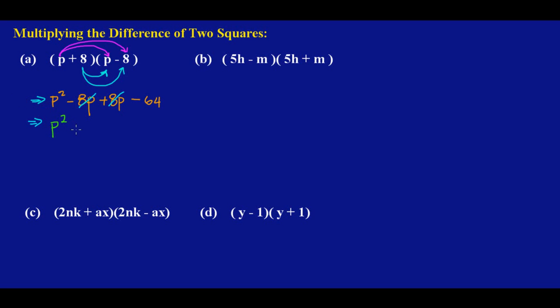And that's my answer, beautiful. So that's how we multiply a difference of two squares. All right, let's move on to the next.